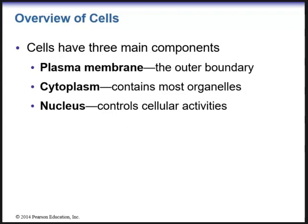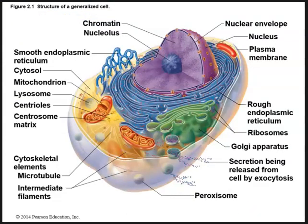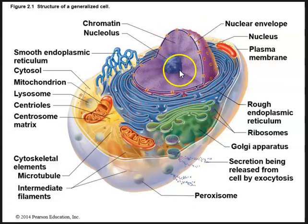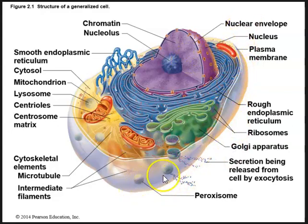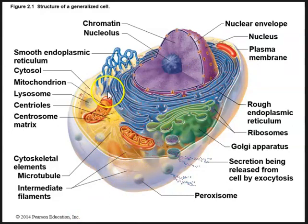Cells have three very main components. There's the outer boundary known as the plasma membrane, and then within the cell we have the cytoplasm which contains most organelles. The control center of the cell is the nucleus, which controls all cellular activities. Here is a basic structure of a generalized cell. We can see the nucleus in the center contained within a nuclear envelope, a smaller structure called the nucleolus, and chromatin within the nucleus. The outer plasma membrane holds the shape of the cell, and within the cell we have the cytoplasm where we can find the different organelles.